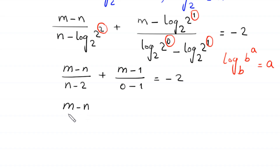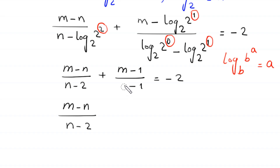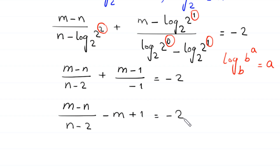We have m minus n divided by n minus 2. Since 0 minus 1 equals negative 1, dividing m minus 1 by negative 1 gives negative m plus 1. So the equation becomes m minus n divided by n minus 2, minus m, plus 1, equal to negative 2.